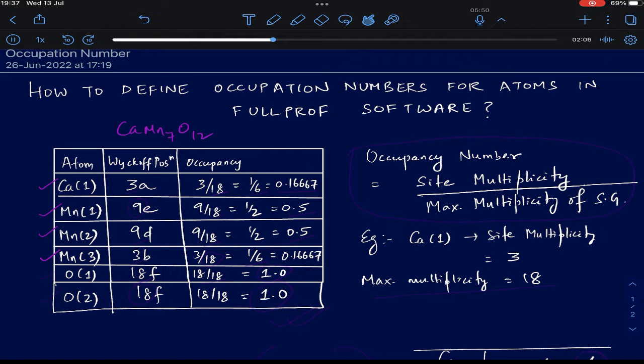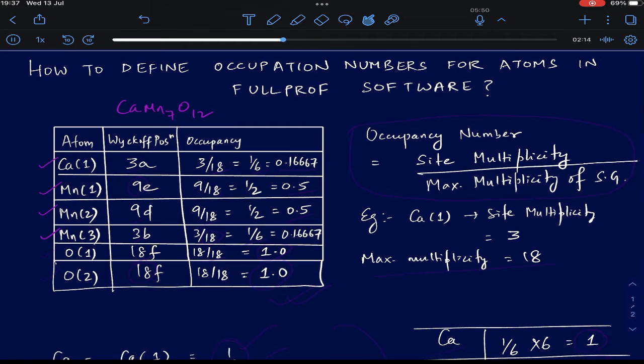Mn1 is sitting at the 9E Wyckoff site, Mn2 is sitting at the 9D Wyckoff site, and Mn3 is sitting at the 3B Wyckoff site. All three of them have a crystallographically different environment and hence they have been labelled as 1, 2, and 3. Also, there are two kinds of oxygen atoms in this compound denoted by O1 and O2, each of them sitting at the same Wyckoff site of 18F.